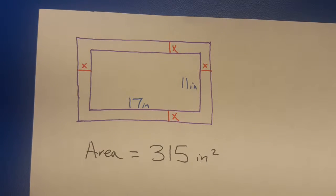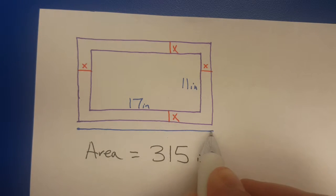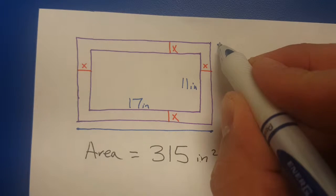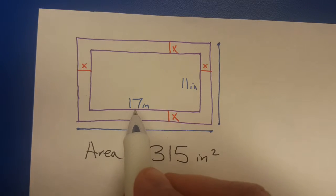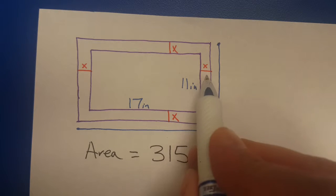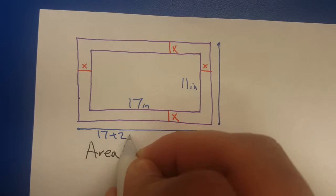That means we got to figure out what this to this is. We can write it with algebra. It's 17 inches across the photo and then x to the right, x to the left, so this would be 17 plus 2x.